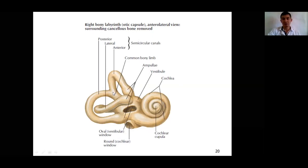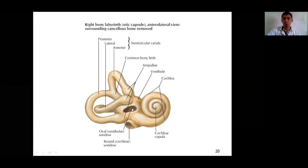In this diagram of the bony labyrinth we can see the anterior semicircular canal, posterior semicircular canal, and lateral semicircular canal. At the vestibule, there are two openings: the oval window (fenestra vestibuli), to which the base of the stapes is attached, and the round window (fenestra cochleae), which is covered by the secondary tympanic membrane.